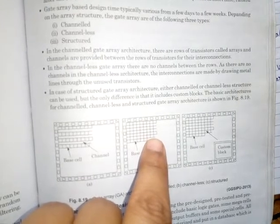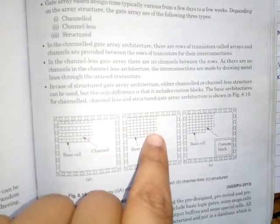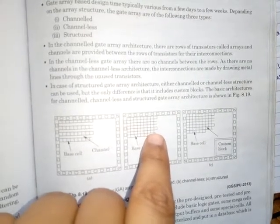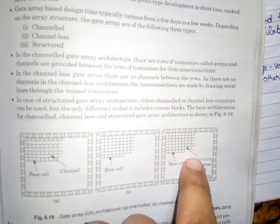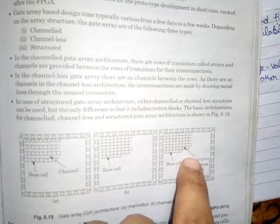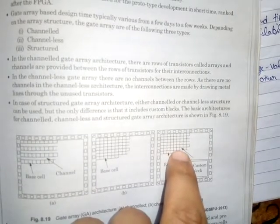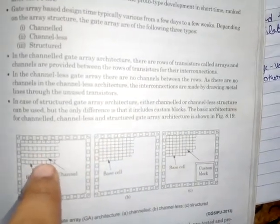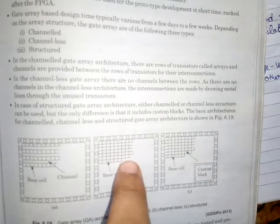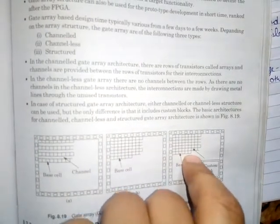That makes use of unused transistors to provide interconnections. And in the structured gate array, both channelled or channelless can be used, but the difference here is that the blocks that are being used in structured gate array are custom blocks. In the previous one the blocks were not custom, they were fabricated before. And in this structured gate array the blocks are custom.